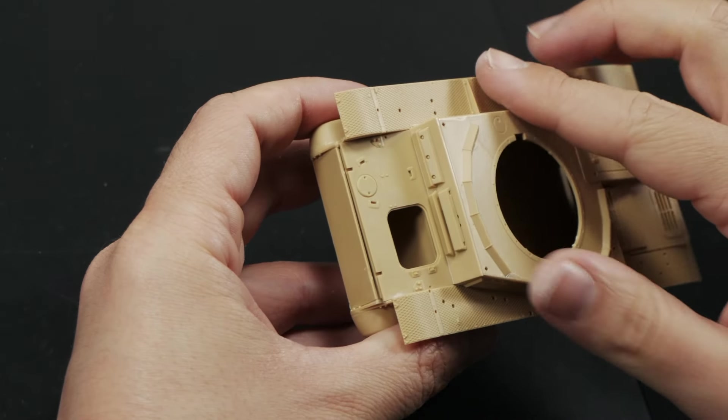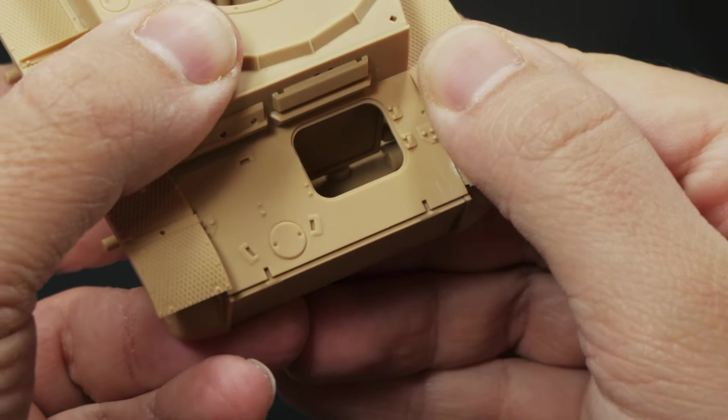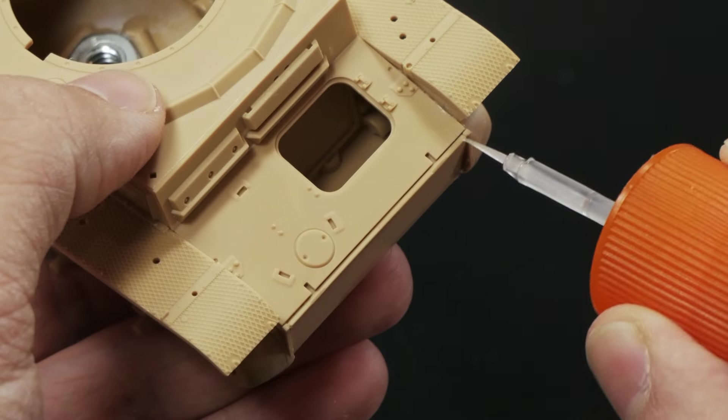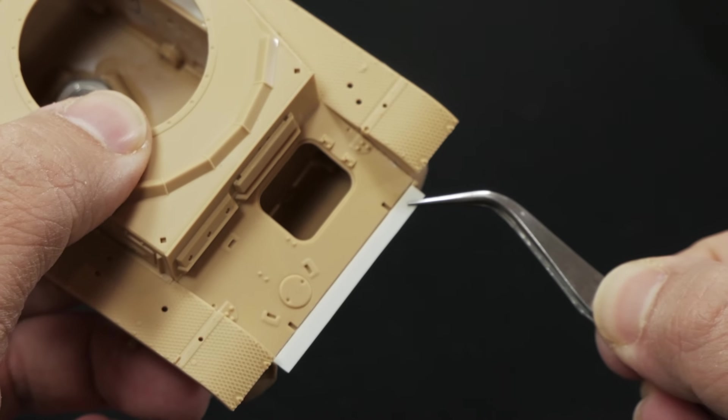When I build models I like to start gluing the main parts first to make sure they fit correctly and avoid misalignments. In this kit the two main front armor plates don't fit very well. Even making some light pressure barely solves the problem.